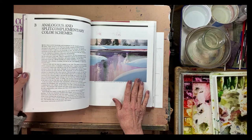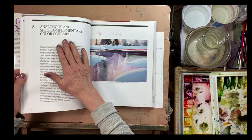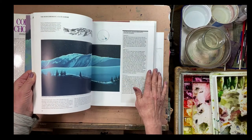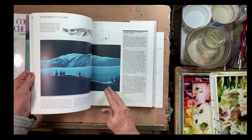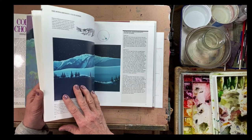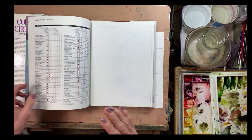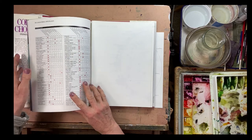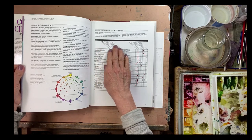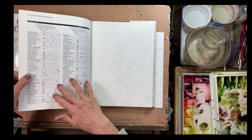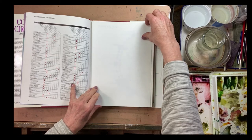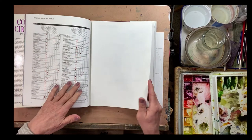In here he goes through the different color schemes. Here we've got analogous and split complementary, we got the complementary color scheme, monochromatic. There's all kinds of exercises you can do in here. It's an excellent book, so I would highly recommend looking for it if you're interested in going deeper in color theory, which I really recommend that people do because it makes a huge difference in your painting outcome.